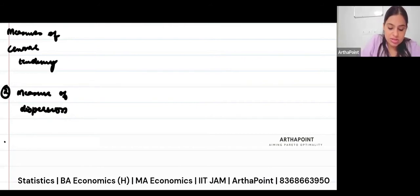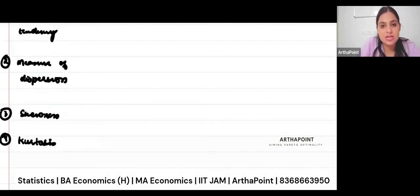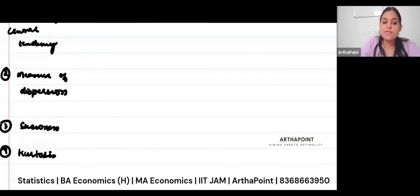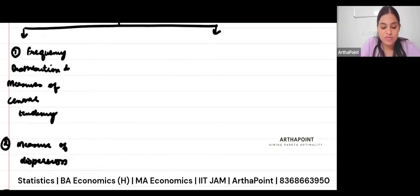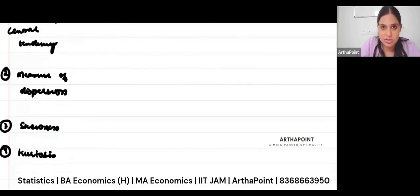The third thing that comes under this is skewness and kurtosis. So examiners sometimes would test some formula based on skewness and kurtosis. I will show you what kind of questions come in accordance with this part. So this is your first part of statistics where we talk about measures of central tendency, measures of dispersion, skewness and kurtosis.